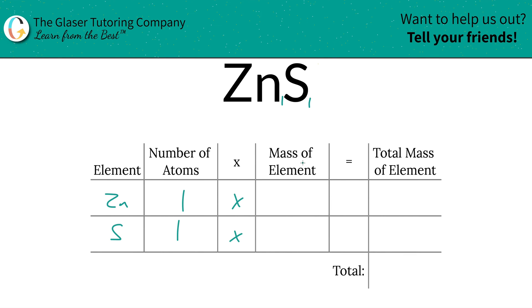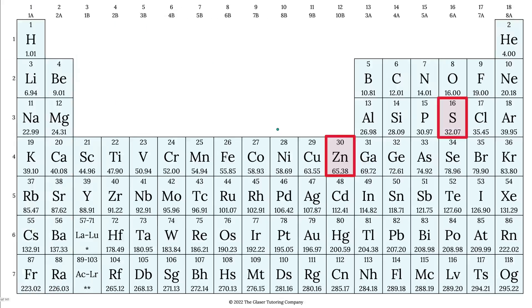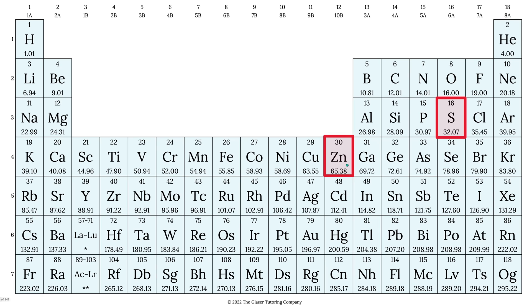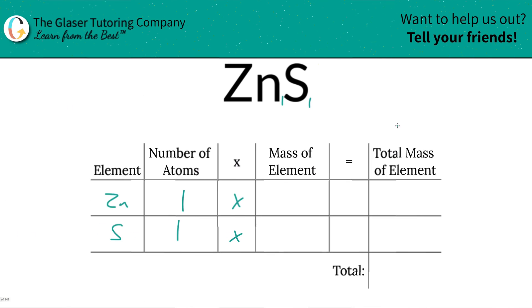Then we're simply going to take those number of atoms and multiply it by the mass of each element from the periodic table. Zinc's mass is going to be 65.38. Sulfur is going to be 32.07. Let's write them in. So this is 65.38, and sulfur is 32.07.